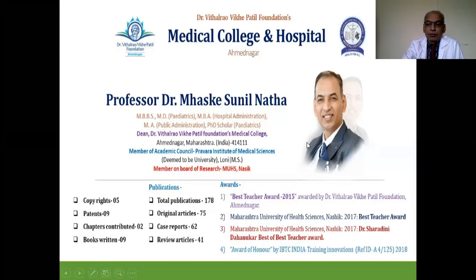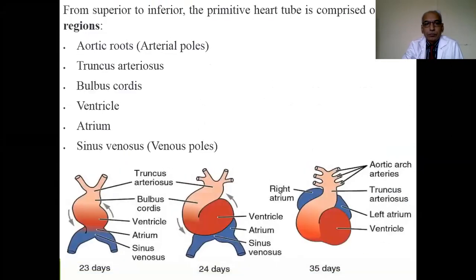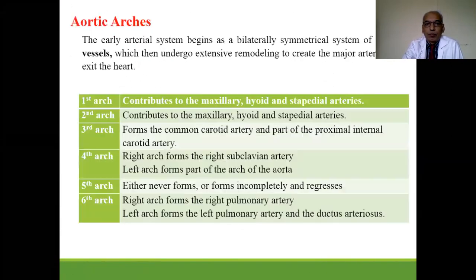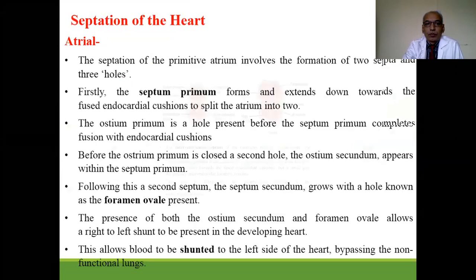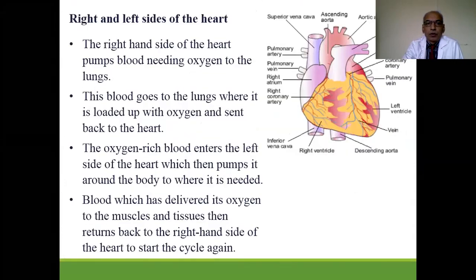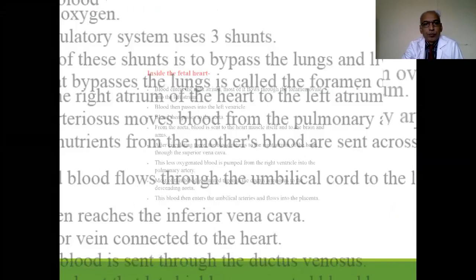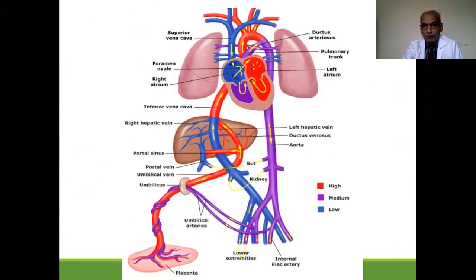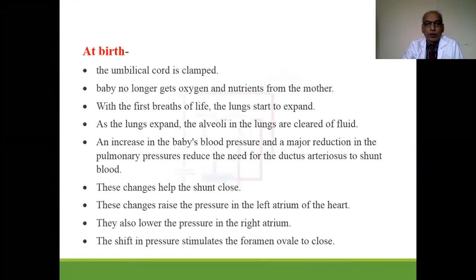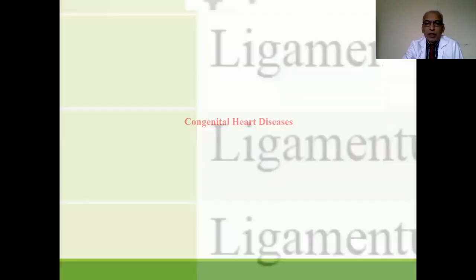In the last lecture series we have seen embryology of heart, anatomy of heart, fetal circulation, and neonatal circulation — that is the physiology of heart — and how the various foramina are overlaid: the ductus arteriosus and ductus venosus, which continue as remnants in adult life.